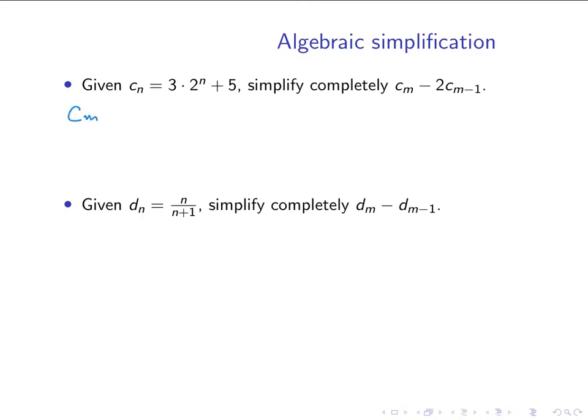Notice in this case that I'm not just subtracting c_m minus the term before, I'm actually doing the simplification of c_m minus 2c_(m-1). So in this case, c_m is 3 times 2 to the m plus 5, and c_(m-1) is exactly the same thing, but now with the exponent m minus 1. The key here is going to be that we have a 2 and we have a power of 2, and so our rules of exponents tell us that we should be able to combine those in some way.